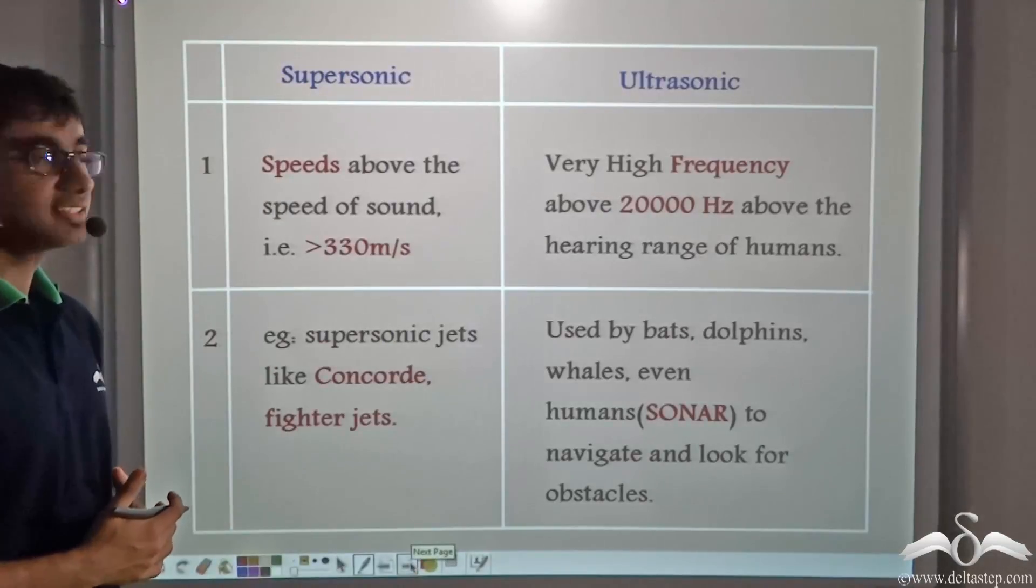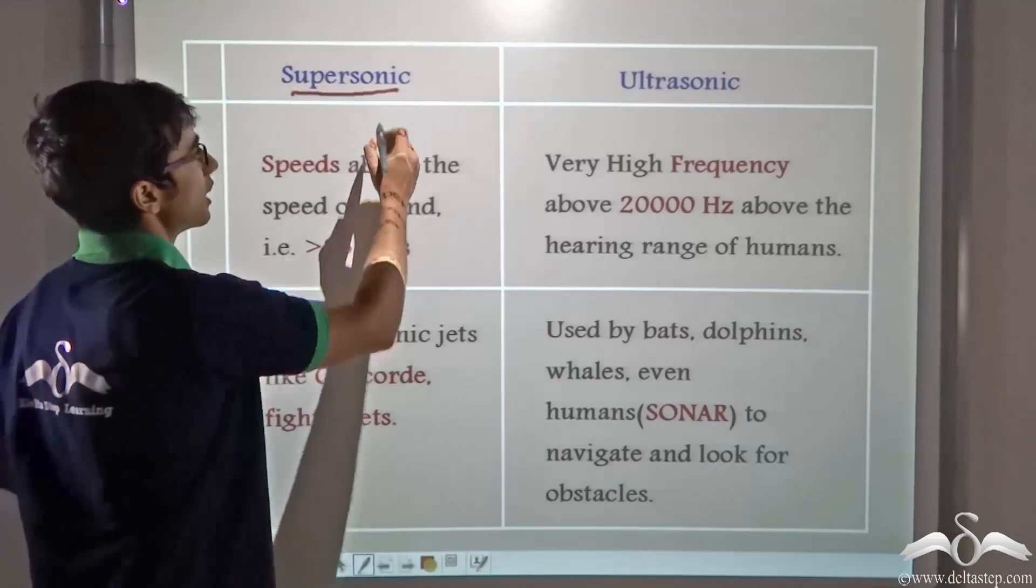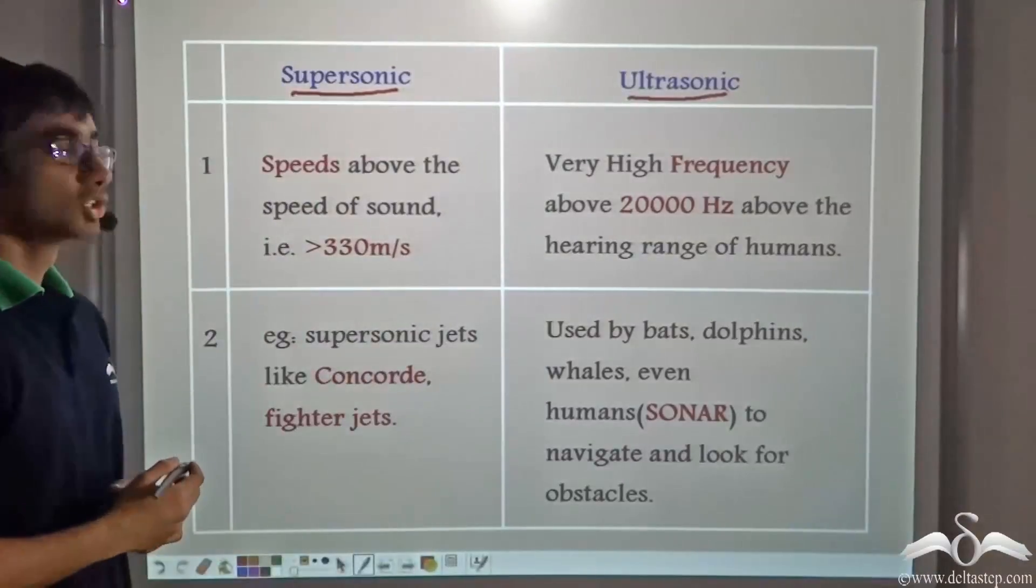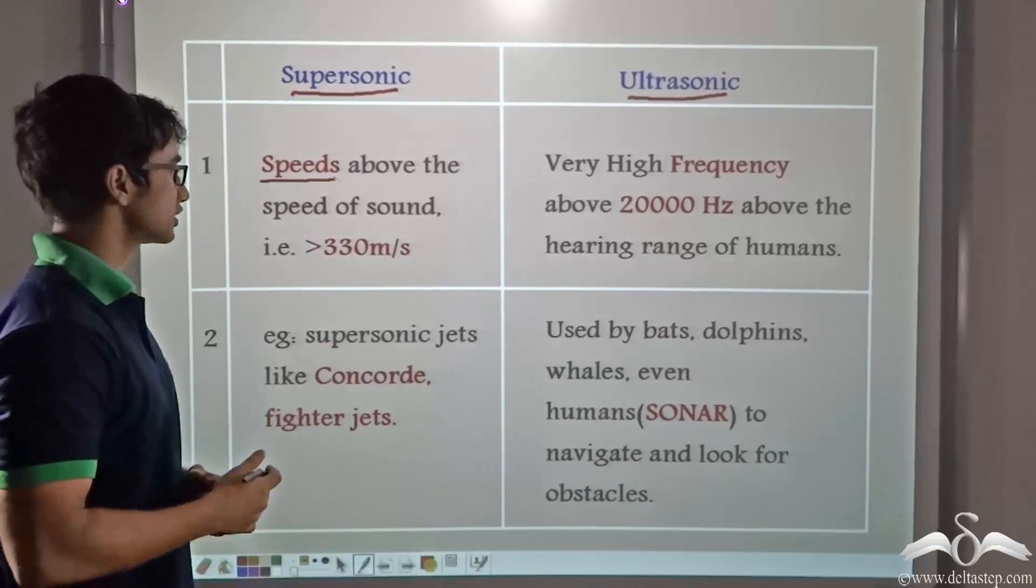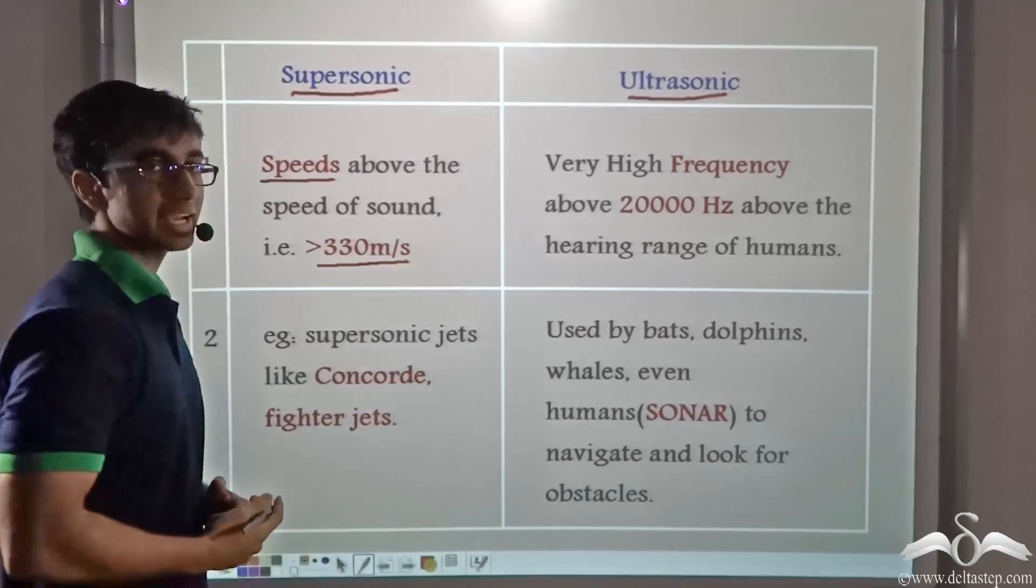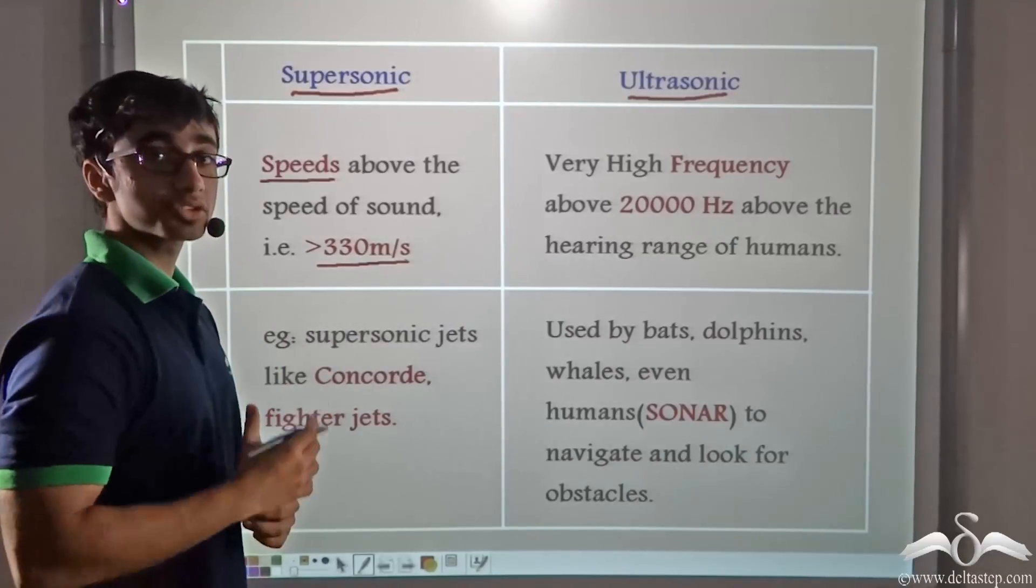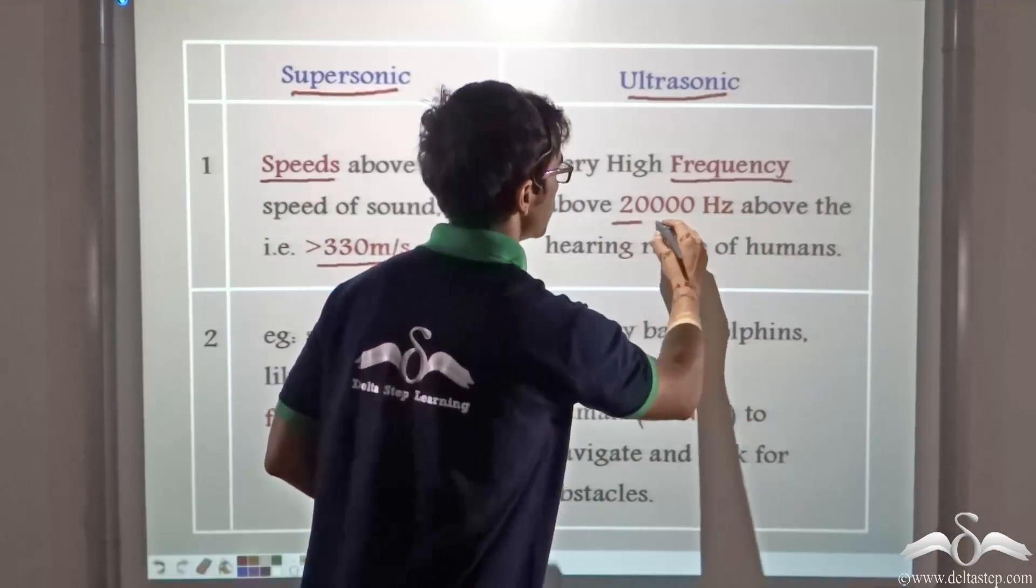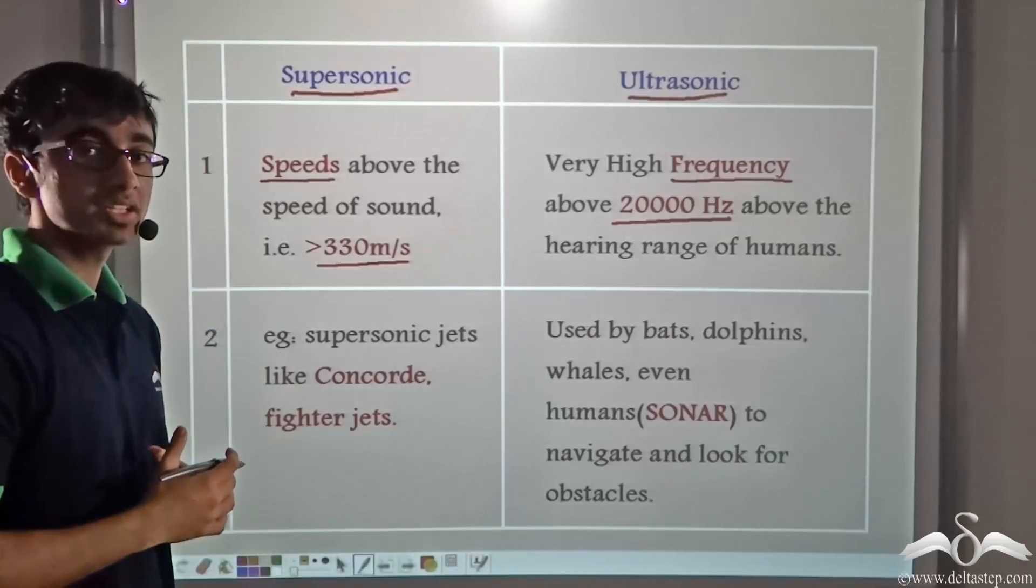Here you will see the difference between supersonic and ultrasonic. So what is supersonic? Supersonic refers to those speeds that are above the speed of sound, that is above 330 meters per second. And ultrasonic refers to those frequencies that are above 20,000 Hertz, that is above the human hearing range.